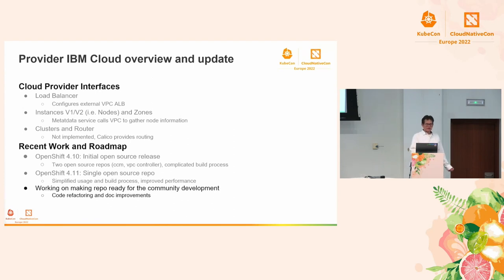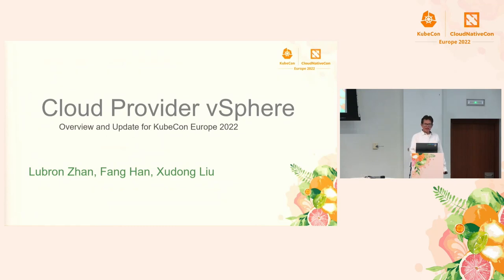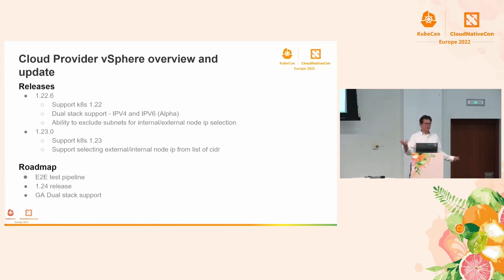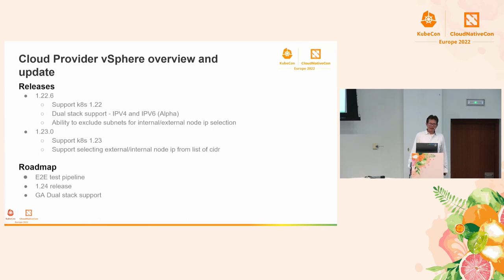They're covering interfaces and recent work. This is the vSphere cloud provider. The summary is that the recent releases bumped up the level of support to match recent versions of Kubernetes. The other big news is that support for dual stack — meaning running IPv4 and IPv6 simultaneously — moved into alpha status, and we anticipate that it will move to GA pretty soon.